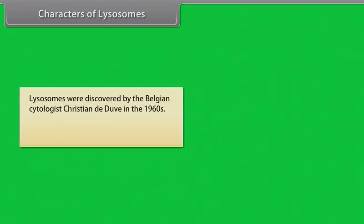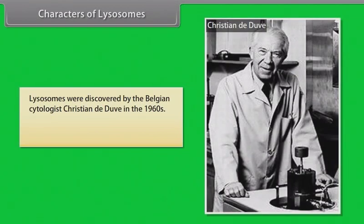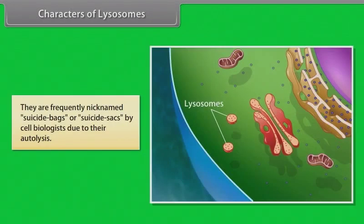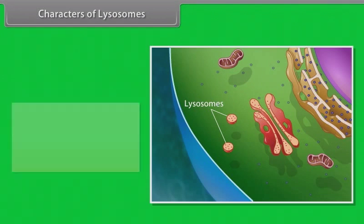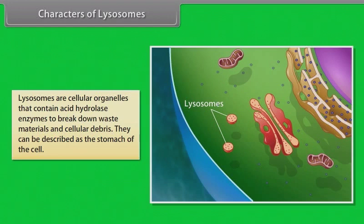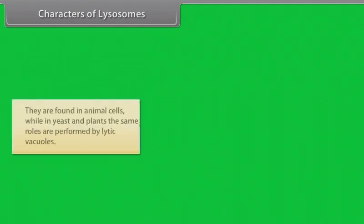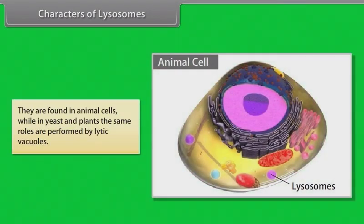Lysosomes were discovered by the Belgian cytologist Christian de Duve in the 1960s. The name lysosome derives from the Greek words lysis, meaning to separate, and soma, meaning body. They are frequently nicknamed suicide bags or suicide sacks by cell biologists. Lysosomes are cellular organelles that contain acid hydrolase enzymes to break down waste materials and cellular debris. They can be described as the stomach of the cell, and are found in animal cells, while in yeast and plants the same roles are performed by lytic vacuoles.